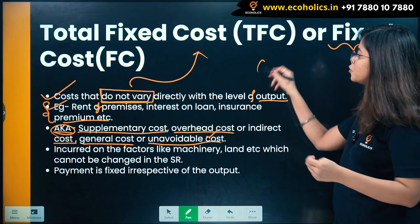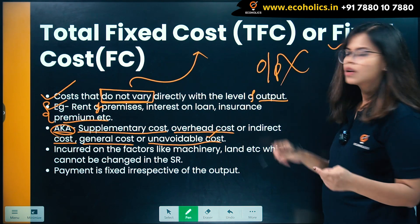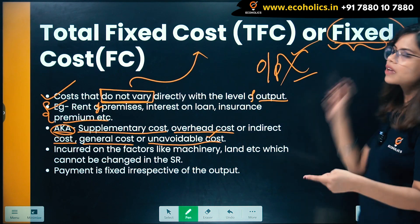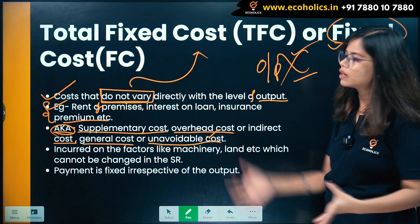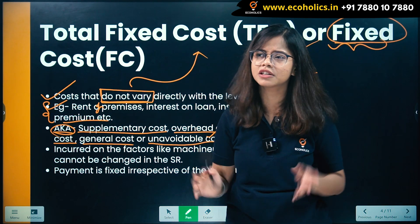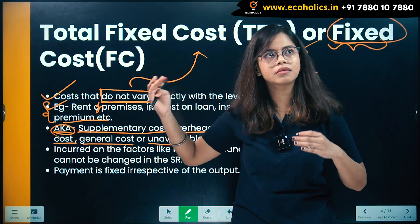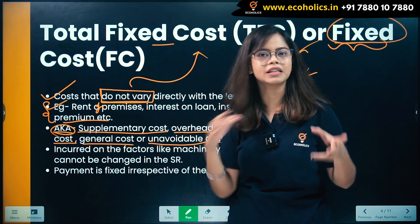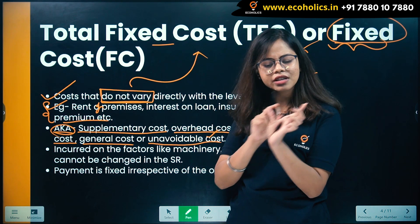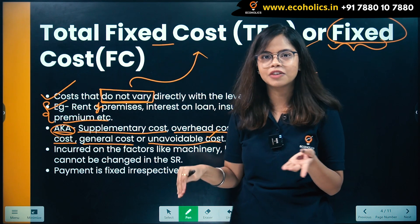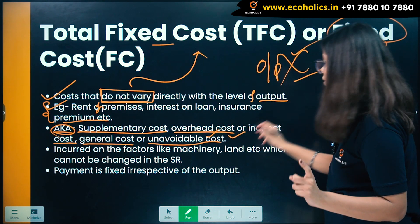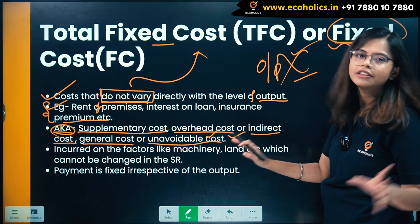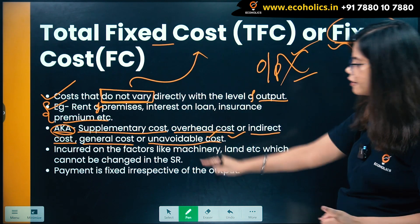Fixed cost is also known as general cost and unavoidable cost. You understand that fixed cost is unavoidable — you cannot avoid it even when output is not happening. Fixed cost — it is fixed. Sometimes just reading the name makes the whole concept clear. Always remember, when you read the name of any concept, the basic idea will become clear to you. Fixed cost: unavoidable, indirect, not directly related with the output.